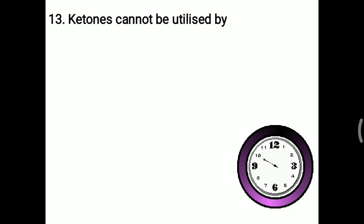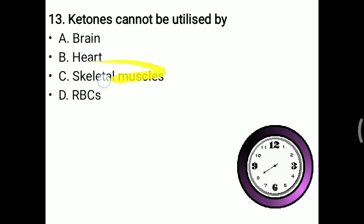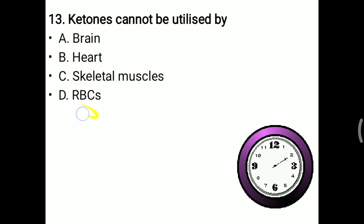Next MCQ: ketone bodies cannot be utilized by. Ketone bodies are generated excessively in starvation and diabetes mellitus. Options: brain, heart, skeletal muscle, or RBC. Brain, heart, and skeletal muscle utilize ketone bodies when glucose is unavailable. Ketone bodies are generated in the liver, but liver cannot utilize them. RBC does not contain mitochondria, and ketone body utilization requires mitochondria — so RBC cannot utilize ketone bodies. The right answer is D — RBC.